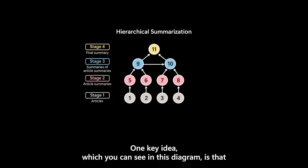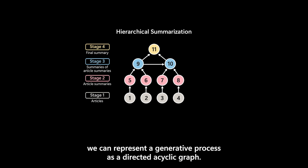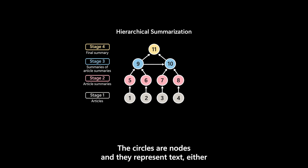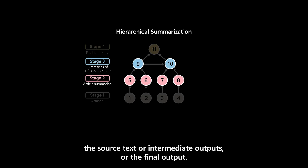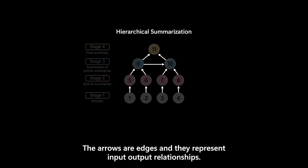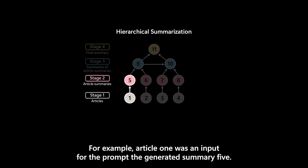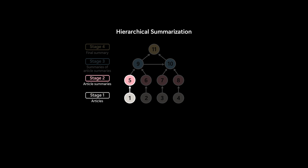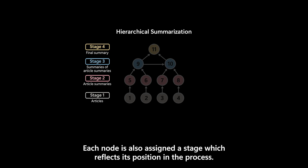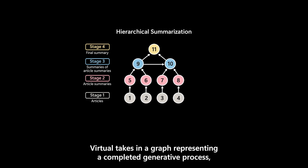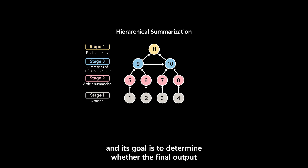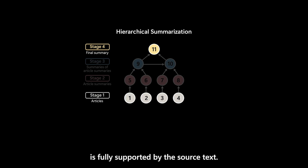One key idea, which you can see in this diagram, is that we can represent a generative process as a directed acyclic graph. The circles are nodes and they represent text — either the source text, intermediate outputs, or the final output. The arrows are edges and they represent input-output relationships. For example, article 1 was an input for the prompt that generated summary 5. Each node is also assigned a stage, which reflects its position in the process — articles, article summaries, and so on. Veritrail takes in a graph representing a completed generative process and its goal is to determine whether the final output is fully supported by the source text.